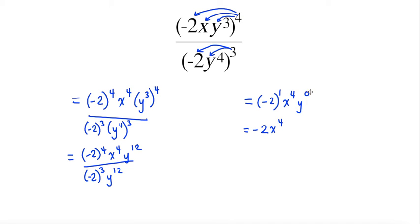I know that y to the exponent 0 is 1, so I can either show that I'm going to multiply this by 1, which won't change the value of it. So it's just going to be negative 2x to the exponent 4.